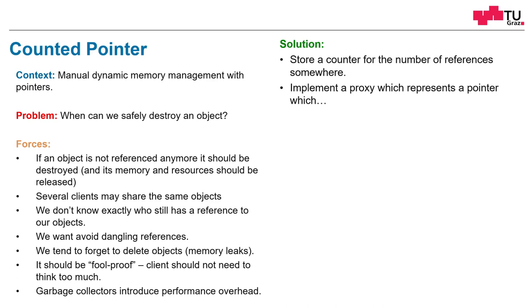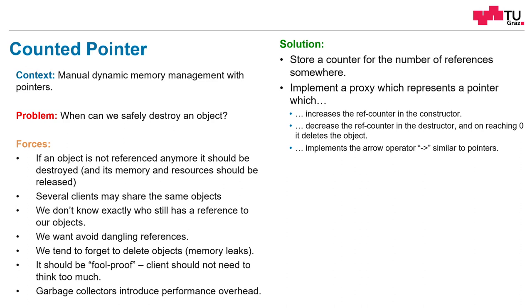And this proxy should do the following: it should increase the reference counter in its constructor. Whenever a new reference is created, the reference counter should be increased. Whenever a reference is destroyed, the reference counter should be decreased. And when it's reaching zero, the proxy should delete the object. Furthermore, it should be transparent. It should implement the arrow operator and should work similar as we are used to use pointers. This should be transparent to the client that is actually using a proxy. On the assignment or copy constructor, it should create a new instance so that the reference counting works. And when this instance is destroyed, the reference counter is decreased again.